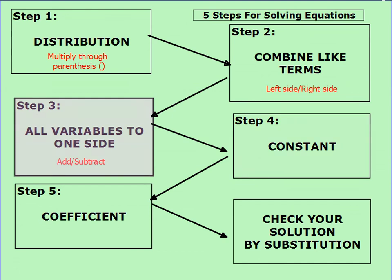Step four does the same thing with constants — we need to get all our constants together. The key is that I want my constants to be on the opposite side from my variables. So if I took all the variables to the left-hand side of the equal sign, I want my constants on the right side. As long as they're on opposite sides, we're going to be good.